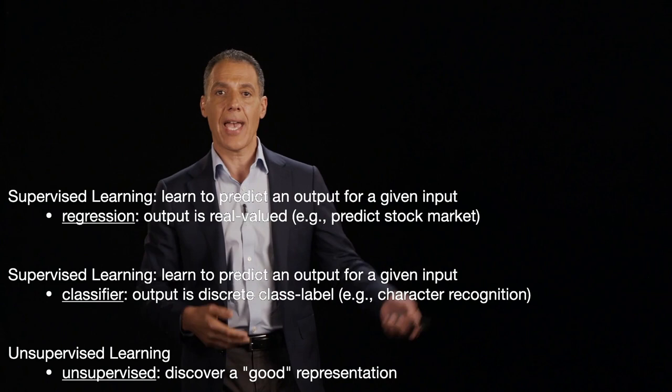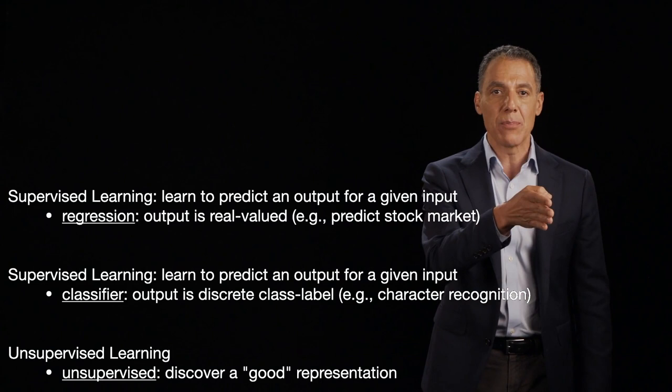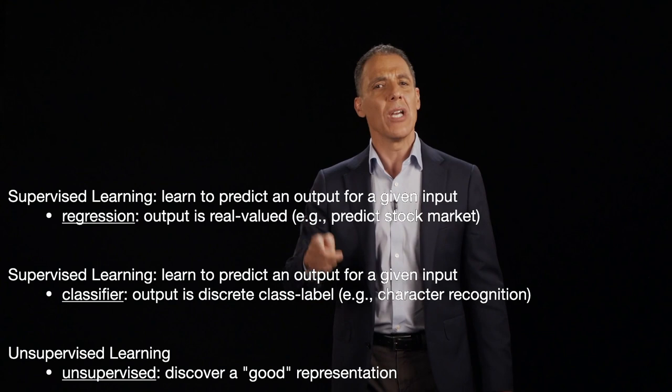Think object recognition — is it a person? Is it a dog? Is it a cat? Is it a car? Is it a plane? Is it a building? Think face recognition — is it me? Is it you? Is it somebody else? Those are classifiers because the output is a label versus a real value. And we're going to be talking about both of these types of supervised learning.